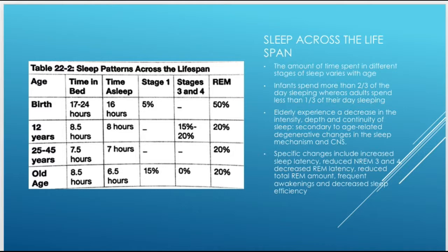Specific changes in elderly sleep include: increased sleep latency — increased time to the onset of sleep; reduced non-REM stage 3; decreased REM latency, meaning they enter REM earlier than the normal 90 to 100 minutes; reduced total REM amount; and frequent awakenings with decreased sleep efficiency. As you age, sleep becomes more and more of a problem, not necessarily due to any underlying psychiatric disorder, but related to other factors.